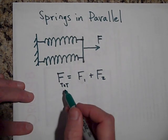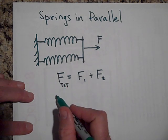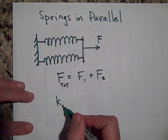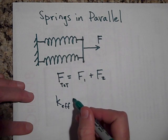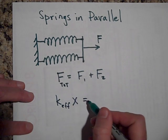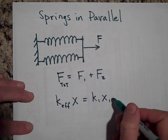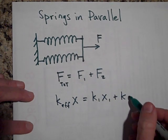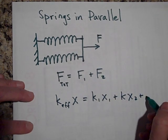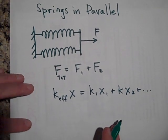Okay, well that's equal to KX. So K effective times X is equal to K1 times X1 plus K2 times X2 plus, and we'll put more on if we need to.